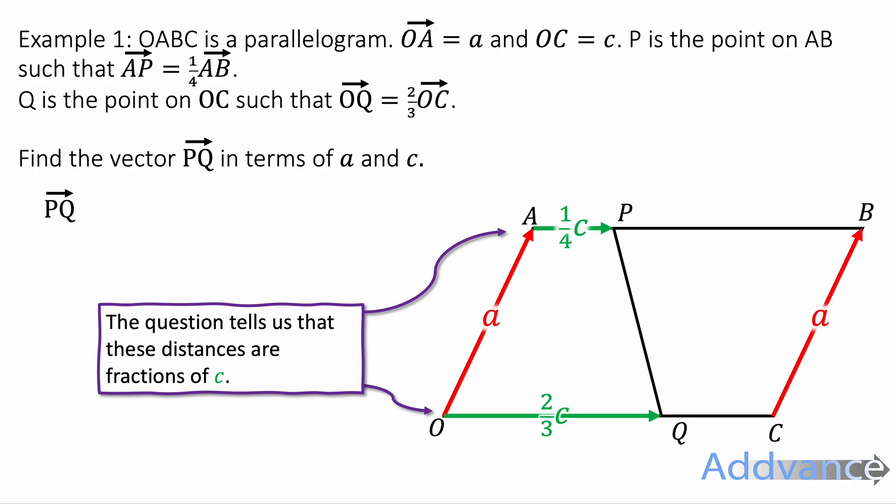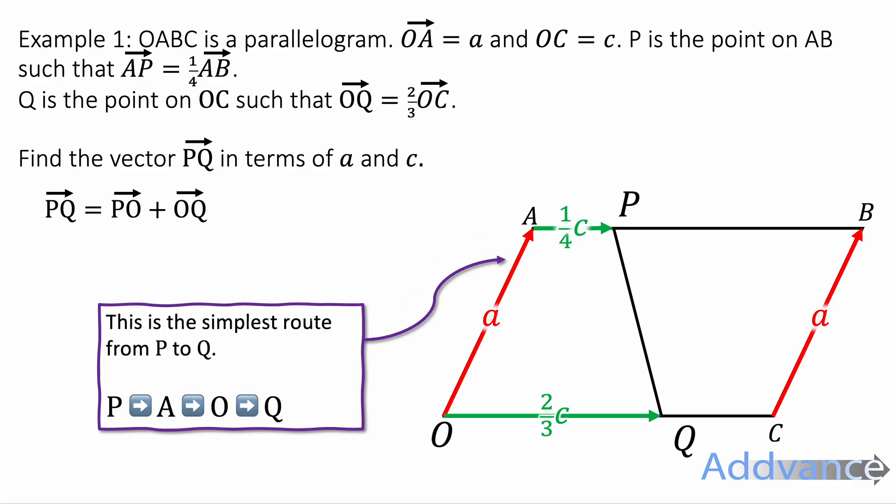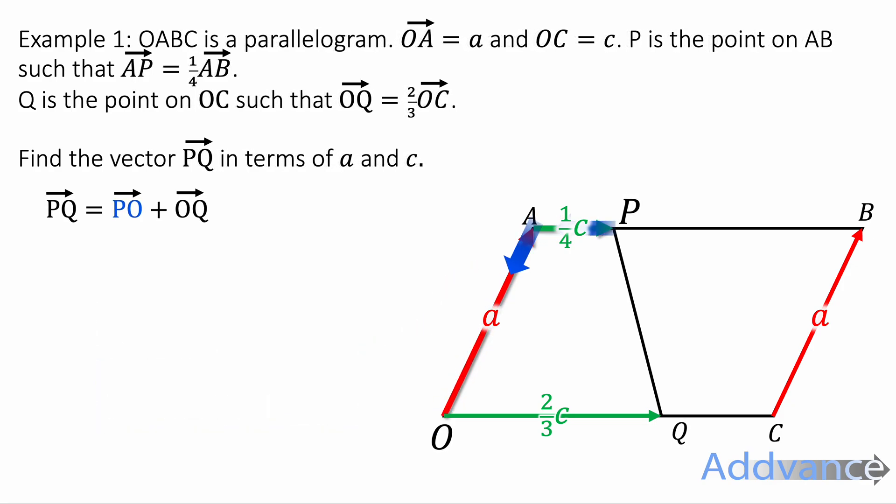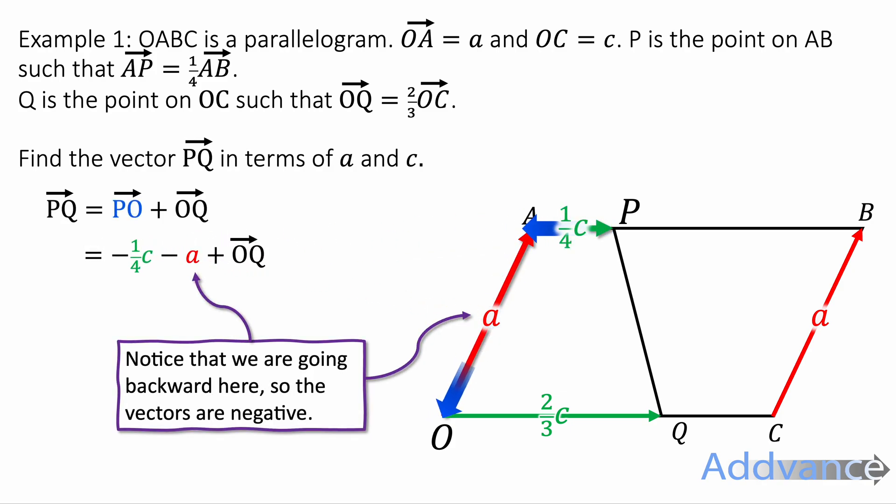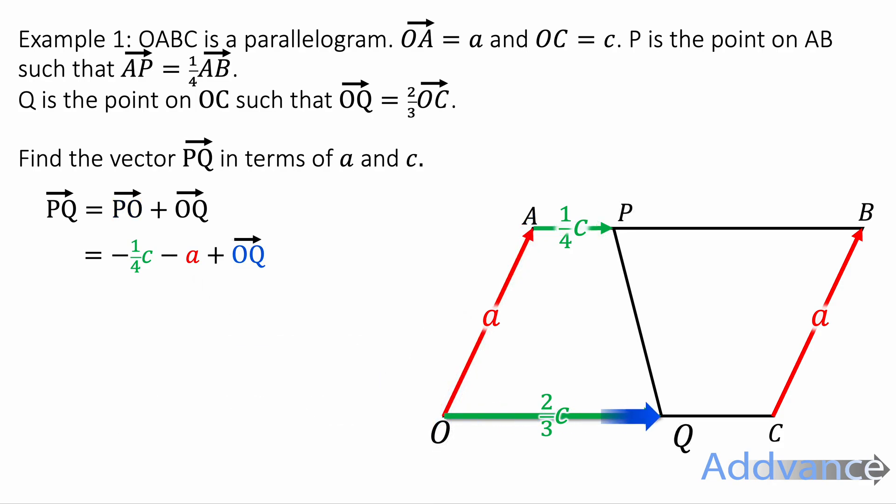We're trying to go from P to Q. So PQ is going from P to A, A to O and then O to Q. We're going to start by going from P to O. To go from P to O, we're going to go backwards a quarter of c and backwards a. And so that's going to be subtracting a quarter of c and subtracting a. Notice that we're going backwards here, so it has to be negative.